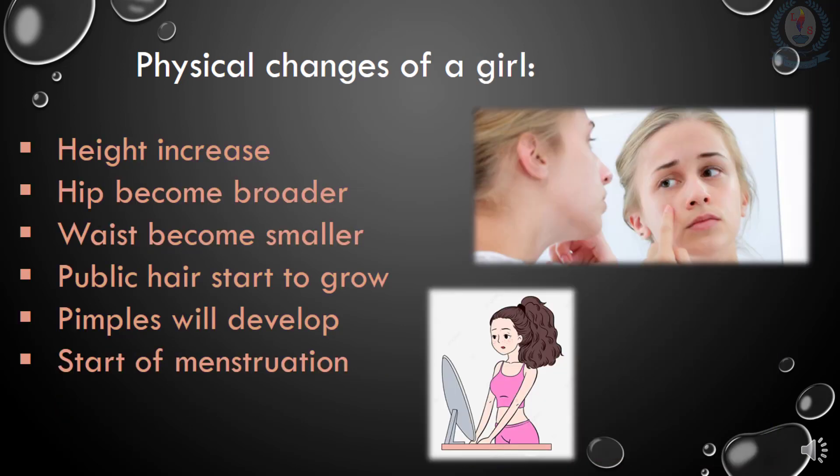Now let's see some physical changes of a girl which occur during puberty. Same as the boys, the height of a girl will also increase suddenly, and their hips will become broader while their waist becomes smaller. Pubic hair will start to appear under their arms, on the legs, and between the legs. The skin will get oily and pimples may develop on the face. The reproductive organ will also start to release egg cells, which cause menstruation.